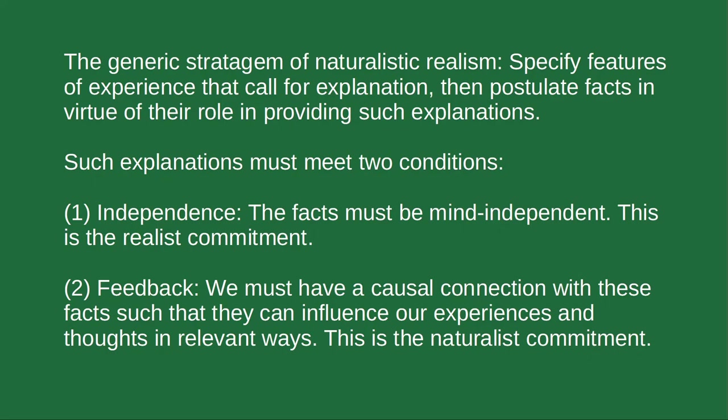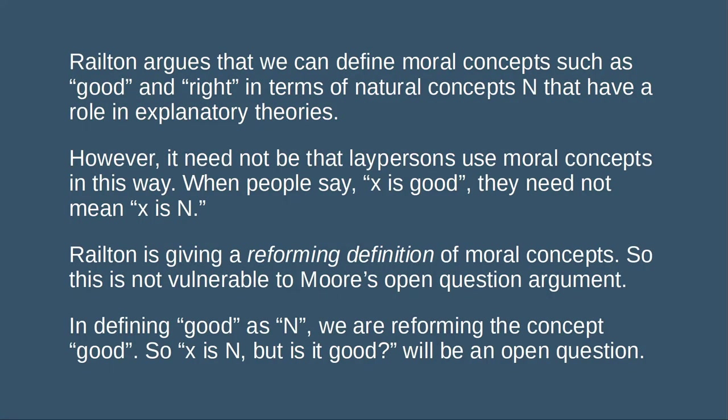Before presenting Railton's theory, one important thing to bear in mind is that he's intentionally giving a reforming definition of moral concepts. Railton wants to show that when we use moral terms like good and right, these can be defined in terms of natural concepts or concepts of natural properties that have a role in explanatory theories. But it need not be the case that laypersons in everyday speech actually use or understand moral concepts in this way. So when somebody says x is good, they need not mean x is n, where n is a natural concept.